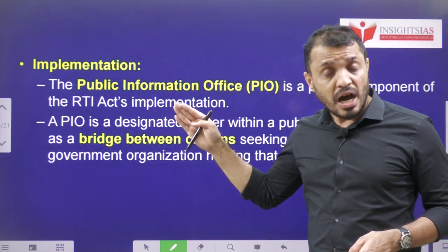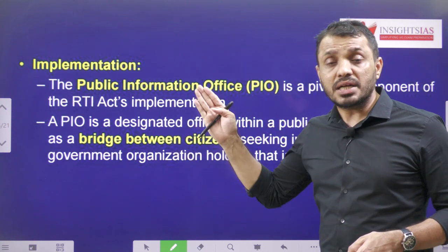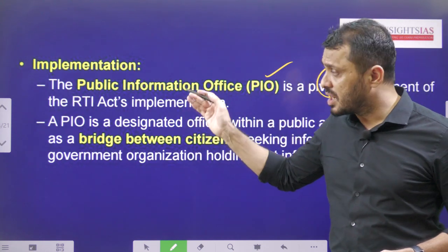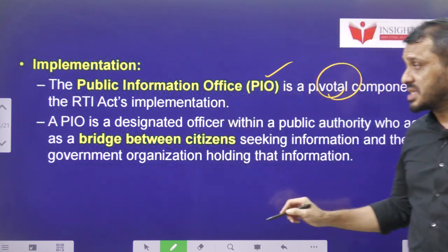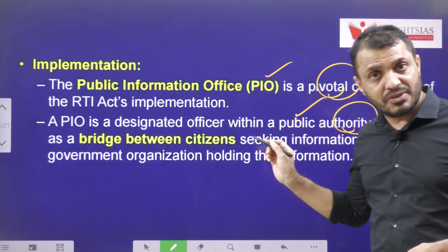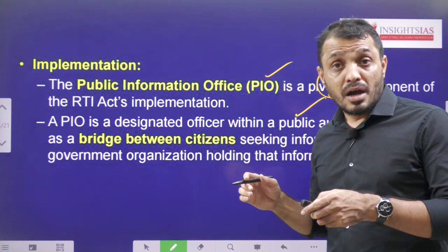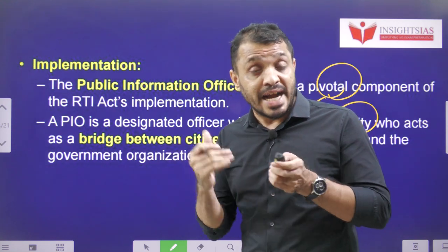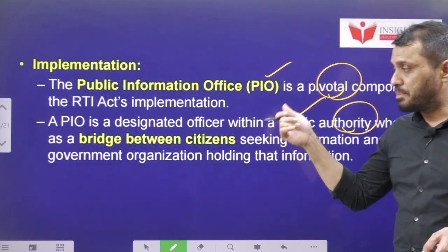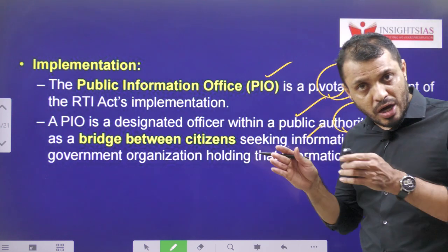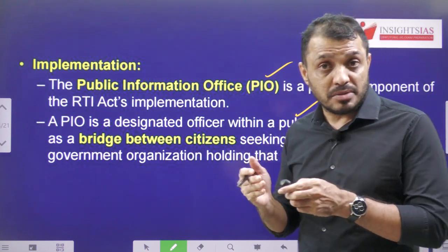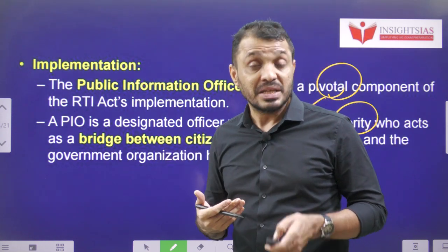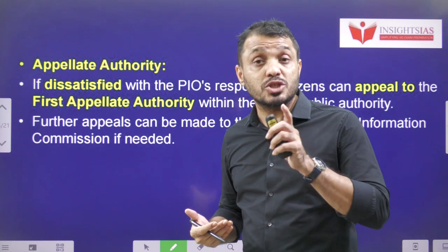Who implements the RTI? RTI is implemented by the Public Information Officer (PIO). They act as nodal officers for the implementation of the RTI Act. The PIO is a designated officer in each and every public authority. Sometimes they may be officers who perform regular duties in their offices, and the additional duty of PIO is assigned to them. They act as a bridge between the organization and the people. Whoever applies under RTI, those requests will be processed by the PIO, and it is the PIO's responsibility to provide the information.